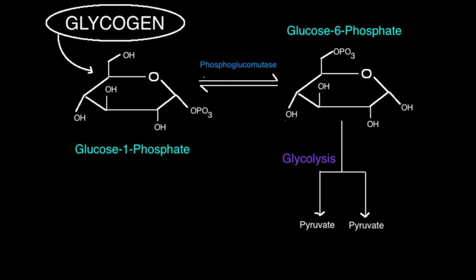We start with our polymer of glycogen right here, which remember are repeating units of glucose monomers. Then through the process of glycogenolysis, shown by this arrow, and remember that the enzyme that catalyzes the main reaction is glycogen phosphorylase, we cleave off repeating units of glucose as glucose 1-phosphate.